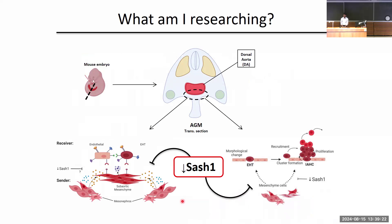HSCs arise during embryogenesis in a specialized region known as the aorta-gonad-mesonephros, or AGM, region. The process by which HSCs emerge is termed endothelial to hematopoietic transition, or EHT. EHT is driven by various intrinsic and extrinsic signals that help push the endothelial cells lining the dorsal aorta towards a hematopoietic fate, ultimately producing HSCs. Our lab has previously identified the scaffolding protein SASH-1 as an extrinsic regulator of EHT.